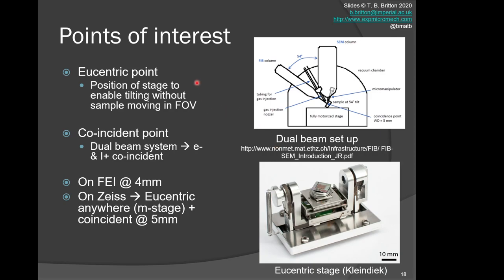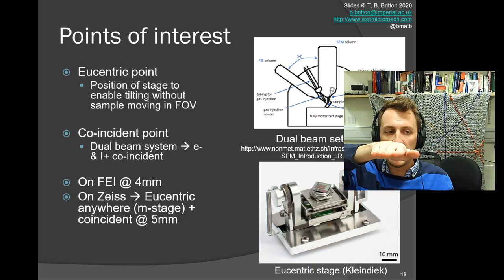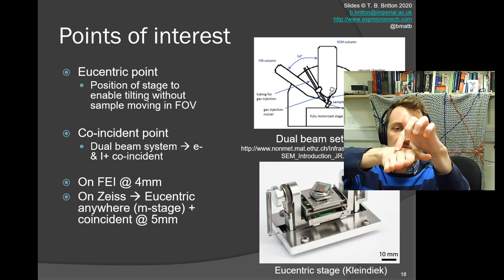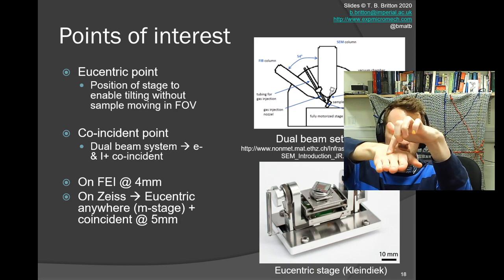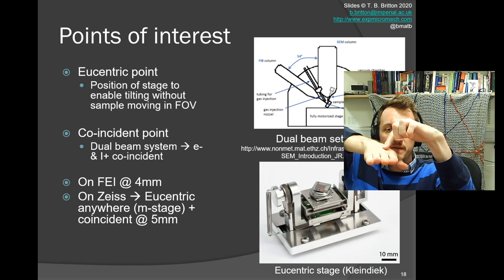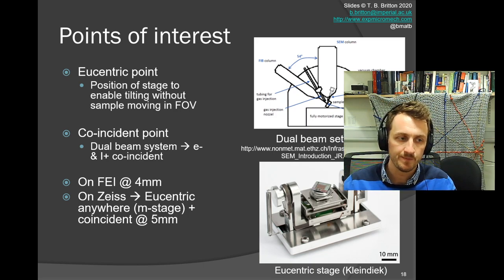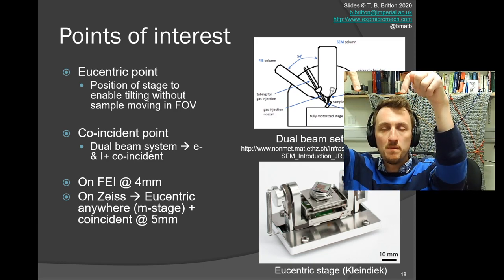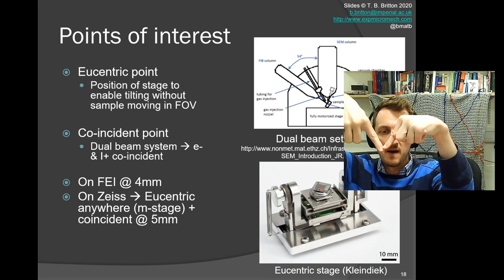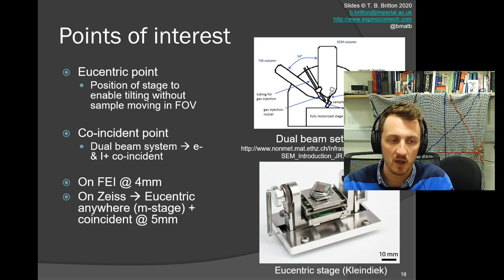In dual beam instruments, we have a variety of points of interest. First is the eucentric point. The eucentric point is that we're going to tilt—the eucentric point is the position that remains constant with respect to our stage as we tilt it. So if I tilted and had this as eucentric, my middle knuckle—I'm keeping that steady—that's my eucentric point. If I've got my two beams, for instance in a dual beam instrument, I will have a second point called the coincident point. That's where the electron beam and the ion beam are coincident.